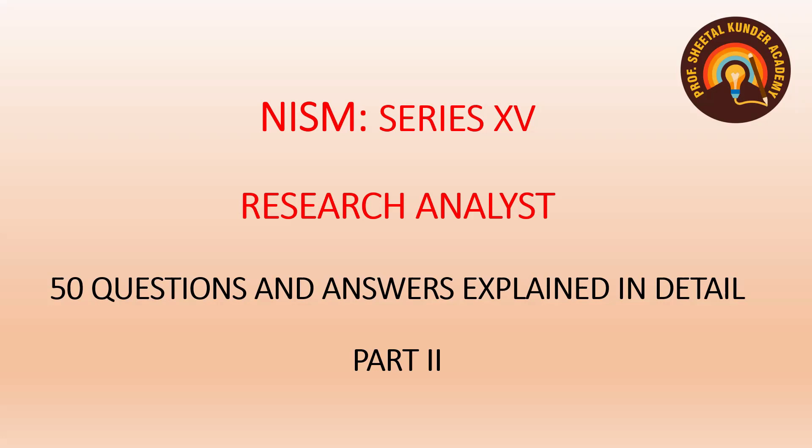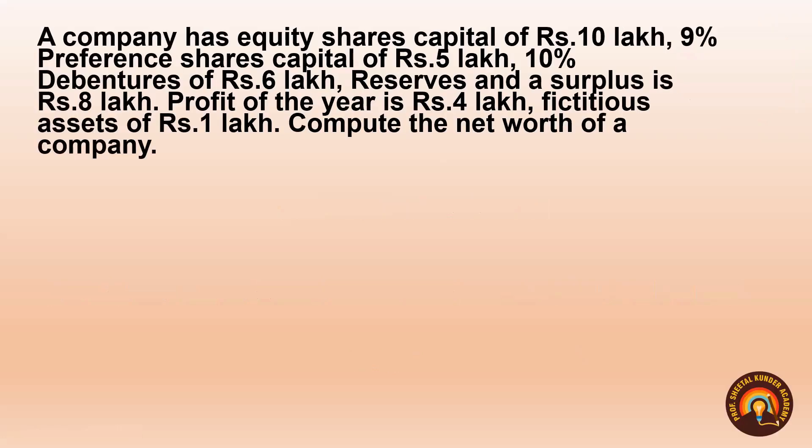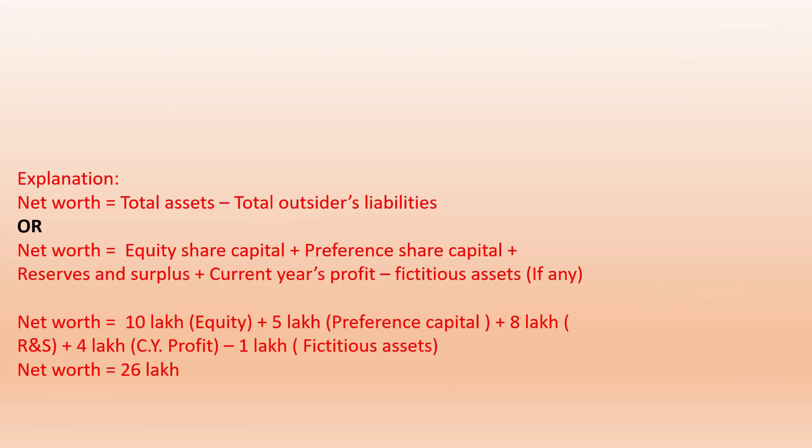Let's start with the very first question of Series 2. A company has equity share capital of ₹10 lakhs, 9% preference share capital of ₹5 lakhs, 10% debentures of ₹6 lakhs, reserves and surplus of ₹8 lakhs, profit of the year ₹4 lakhs, and fictitious assets of ₹1 lakh. Compute the net worth of the company. Net worth basically means shareholders' wealth — equity shareholders plus preference shareholders.